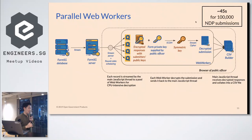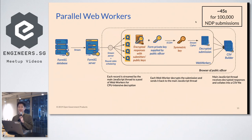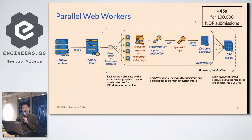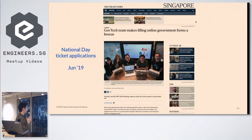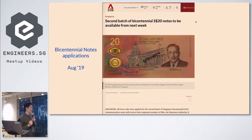Once we used a web worker, we thought: why don't we have more web workers? If you can use one extra thread, why not use 4 or 8? We switched to round-robin across parallel web workers, doing the work in parallel. This reduced the compute time from 2 minutes 30 seconds to 45 seconds. We launched for NDP in June 2019 and thought this solution was really usable. We wanted to get it out there for the next big event, which was the Bicentennial nodes. We had more than half a million submissions for National Day ticket applications; for Bicentennial nodes, we had about 200,000.